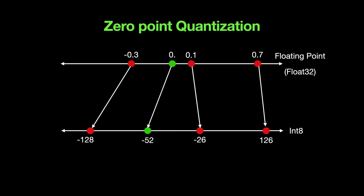The advantage of zero point quantization is that it's very useful in neural networks using the ReLU activation function. ReLU outputs mostly values greater than zero and suppresses negative values, so the range is skewed. With zero point quantization, the zero point shifts to the left, allowing the entire output range to be utilized — making it much more effective when using ReLU in a neural network.